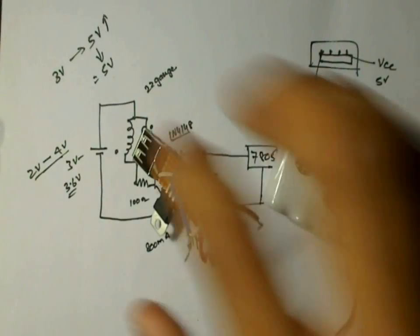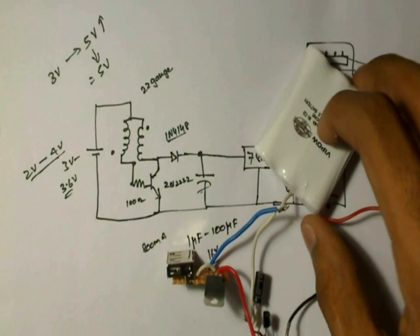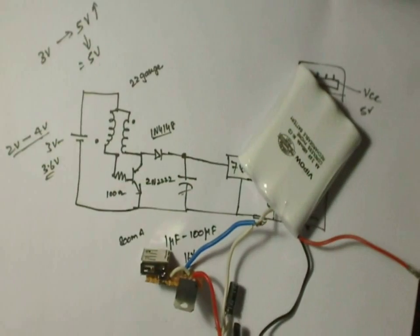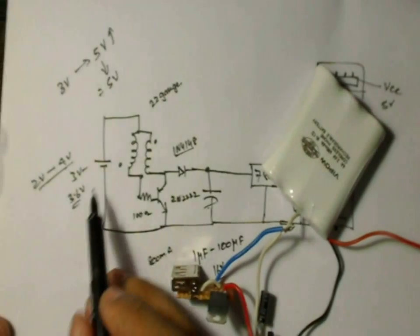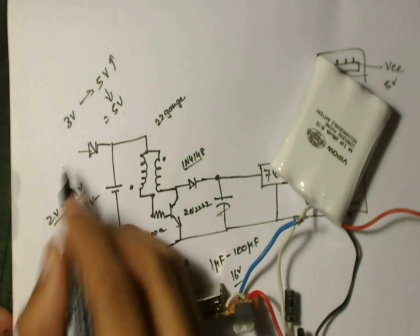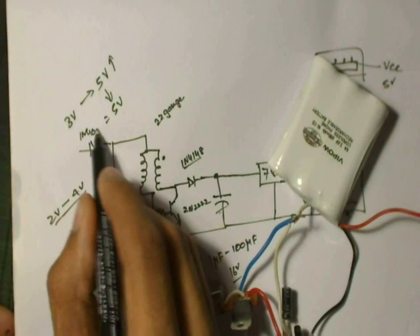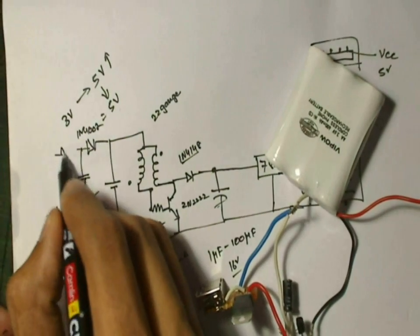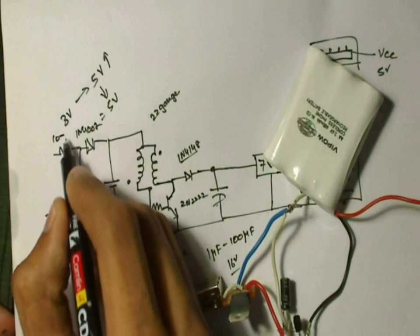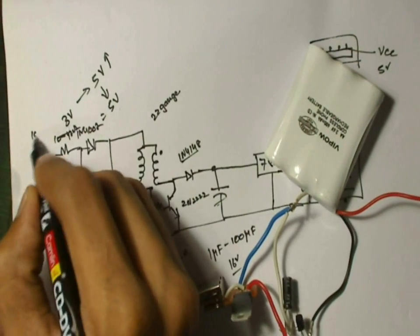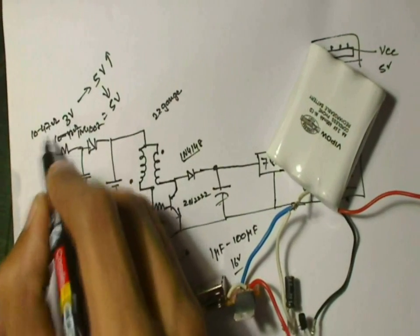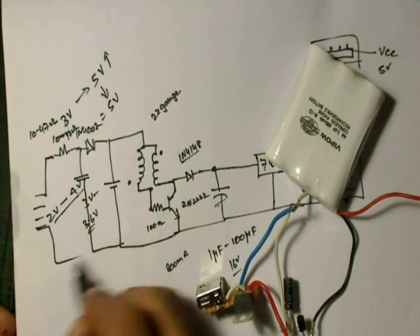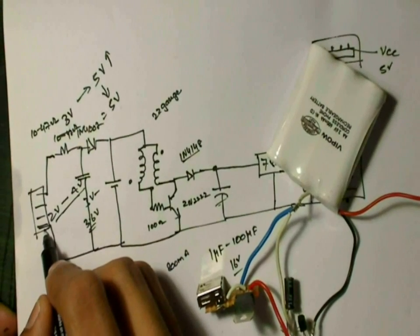If you are using a rechargeable battery pack like this one, for charging the battery also you can use a USB connection cable here. What you have to do is here near the battery, you can connect a diode, preferably a 1N4007 diode with a capacitor in series like this and a small resistor about 10 to 47 ohm resistor, just to limit the current. And you can directly connect a USB pin here. This is a male USB pin which can be connected to your computer to charge the battery.